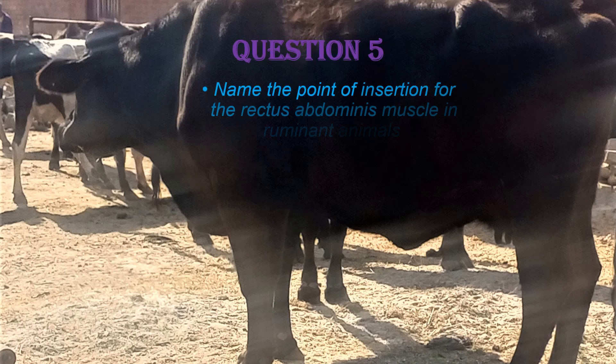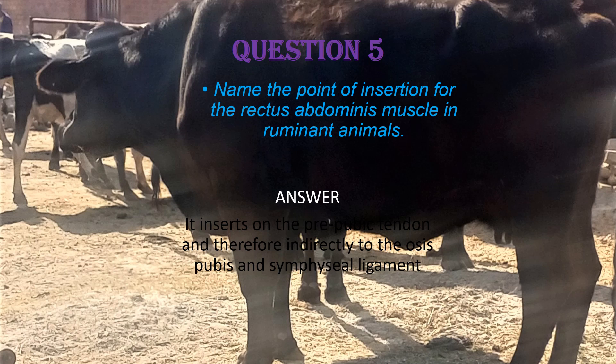Question 5. Name the point of insertion for the rectus abdominis muscle in the ruminant animals. The answer is: this muscle inserts on the prepubic tendon, and therefore indirectly onto the os pubis and the symphysial ligament. So the main structure where it inserts is the prepubic tendon, and through the prepubic tendon it indirectly also inserts onto the os pubis and the symphysial ligament.